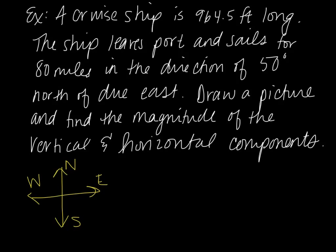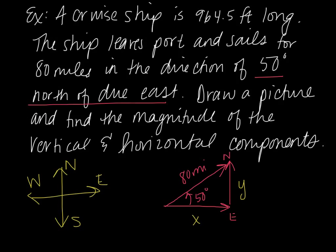So we want to draw a picture. The ship is sailing 50 degrees north of due east. So here's due east, and here is north. And the ship is sailing north of east. So this is the ship going 80 miles. This is the direction, 50 degrees north of east. Here's north, here's east. So we want to find the horizontal and the vertical components. The horizontal component here is x. The vertical component here is y.